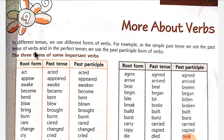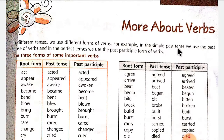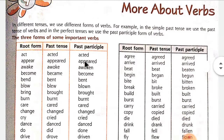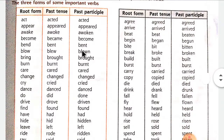In the simple past tense, we use the past tense of verbs, and in the perfect tense, we use the past participle form. In this chart, we see the three forms of some important verbs — the past tense form and the past participle form.